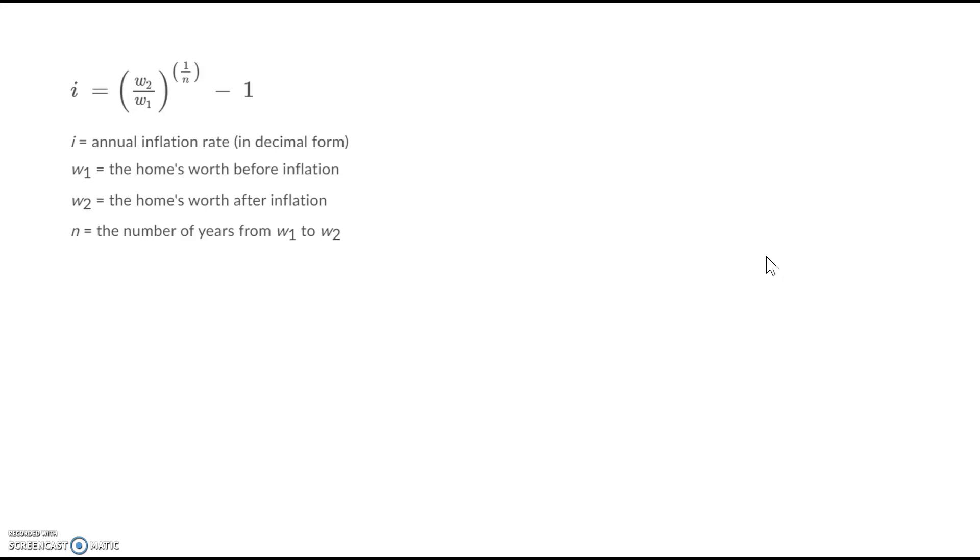Let's take a look at the math because this is where it went wrong. If I want to solve this equation right here for W2, then I got to get rid of everything else, right? That's the algebra. So first, everybody got this part. You can add one to both sides. And then you have W2, homes worth after inflation, W1 before inflation, and then just to the one over N.